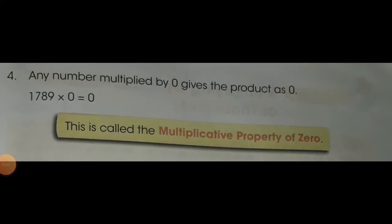The 4th property: any number multiplied by 0 gives the product as 0. Here you can see in the example: 1,789 multiplied by 0 equals 0. This is called the multiplicative property of 0. Whenever we multiply any number with 0, we will get a product of 0.